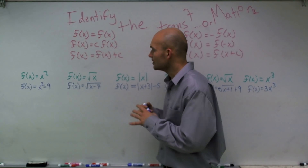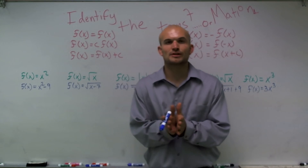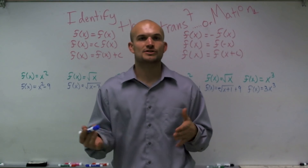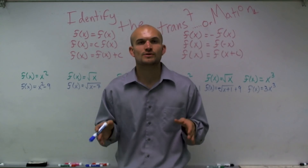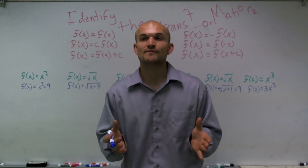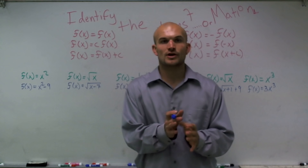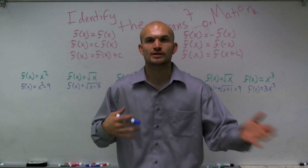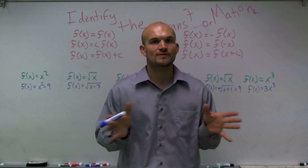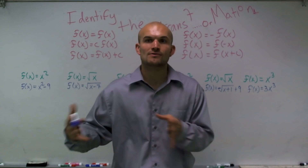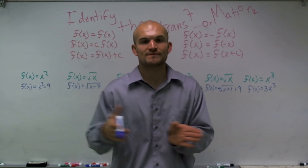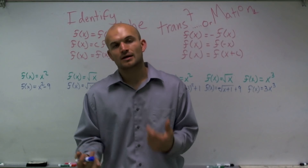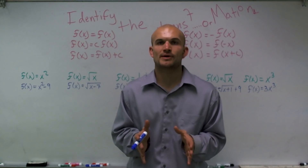When we're talking about transformations, it's important when you're learning how to graph a certain type of function to understand what the parent function is. The parent function is the identity of that graph where there have been no transformations — whatever input you plug in, the output goes directly through the function with nothing shifting it right, left, up, down, or reflecting it.